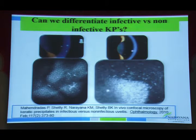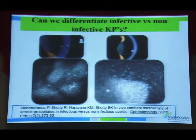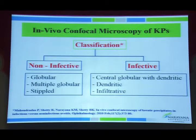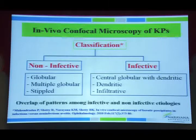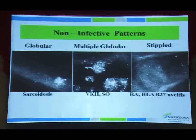Using confocal microscopy, we can differentiate KP morphology. A globular pattern, multiple globular pattern, or stippled pattern are classically seen in non-infective uveitic entities.